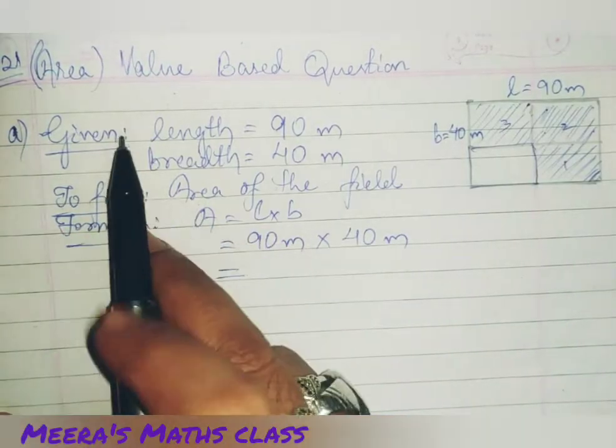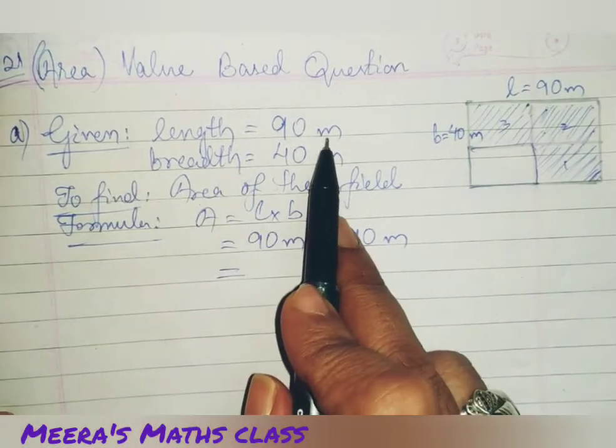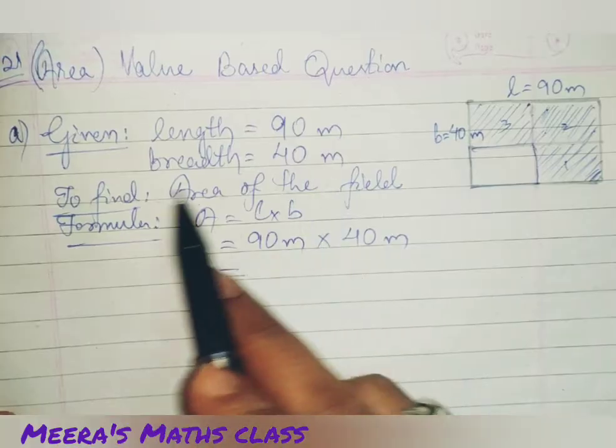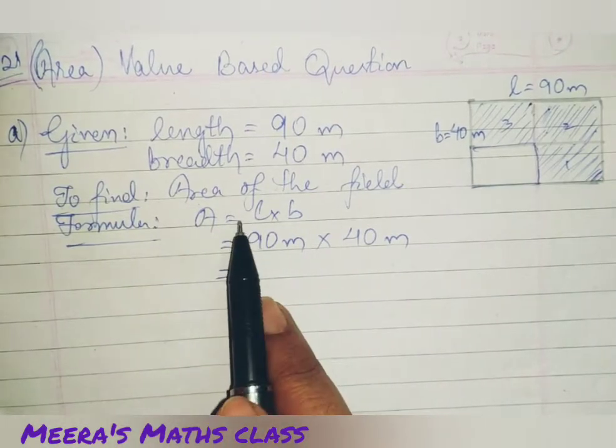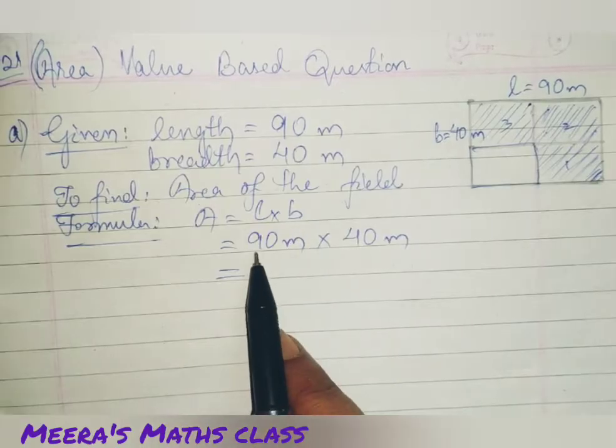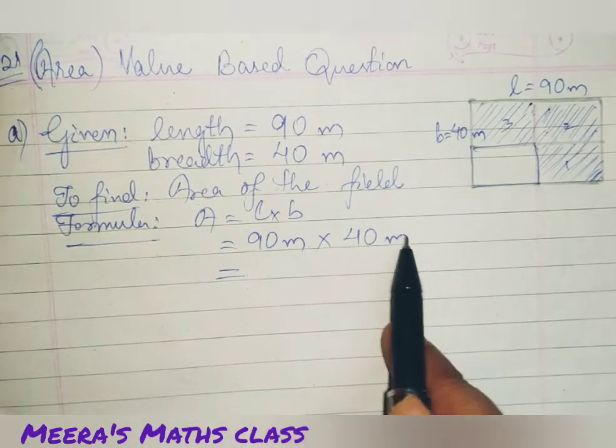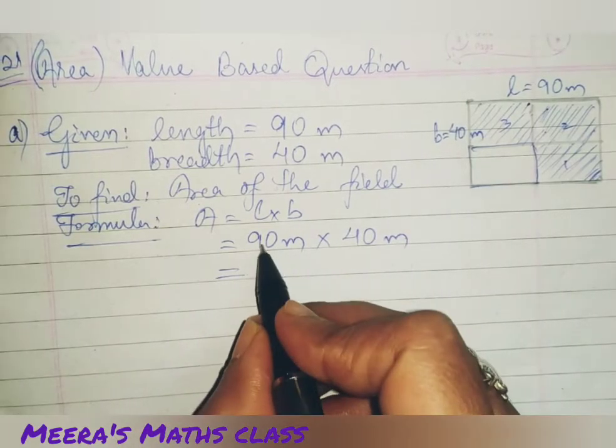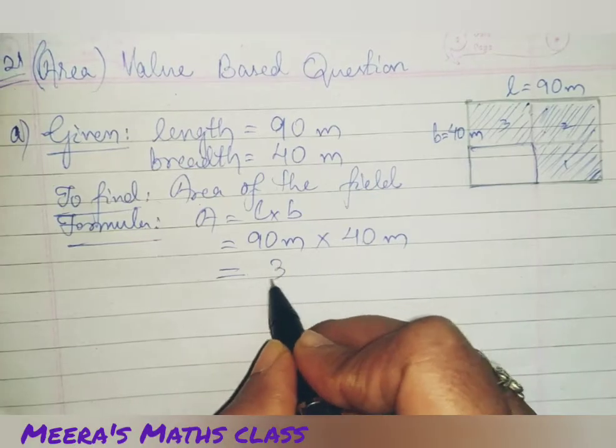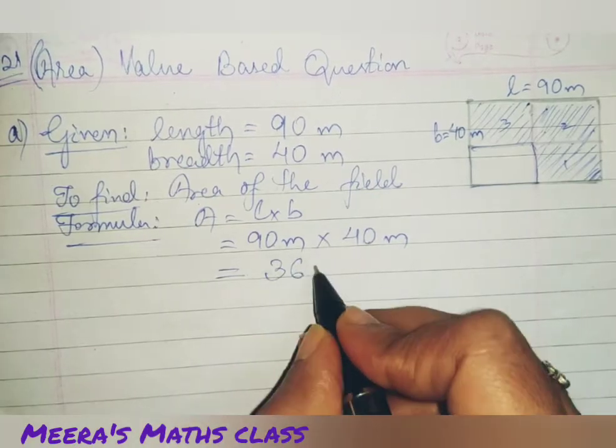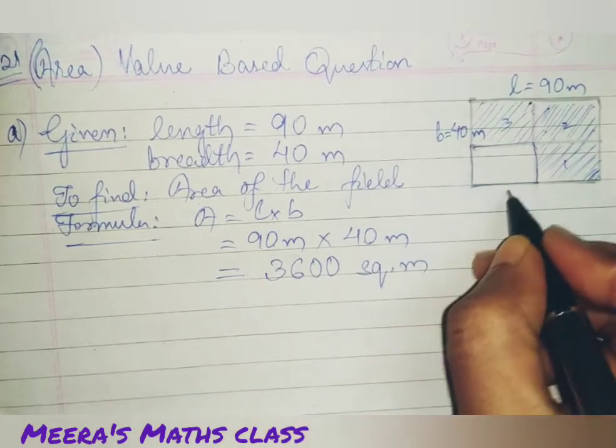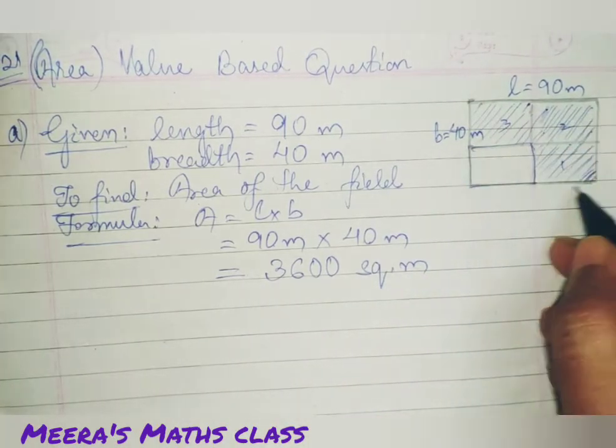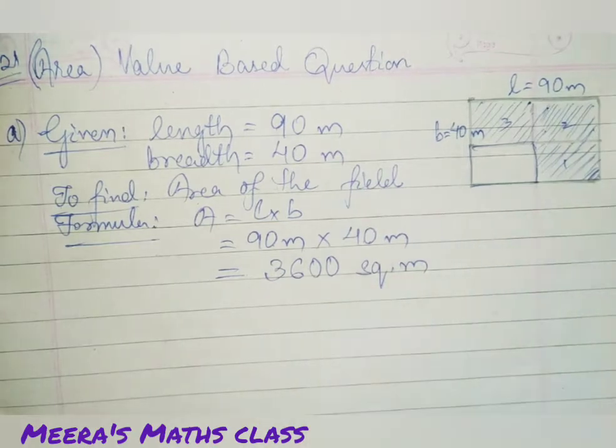So, what you are going to do? Write. Given length is equal to 90 meter, breadth is equal to 40 meter. To find area of the field, formula you are going to use. Area is equal to length into breadth. That is equal to 90 meter into 40 meter. Now, what you are going to do? Nine fours are 36. Then, add the zeros, this square meter. So, this whole area, we found out the whole area of the field.